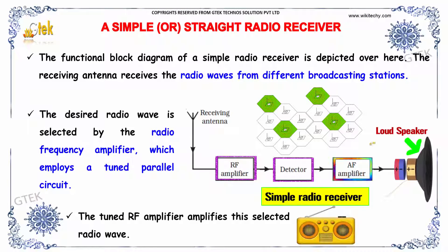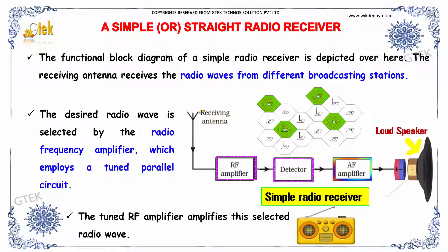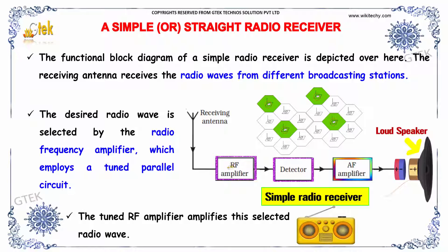Here is the functional block diagram of a simple radio receiver. The receiving antenna receives the radio waves from different broadcasting stations. The desired radio wave is selected by the radio frequency amplifier, which employs a tuned parallel circuit. The tuned RF amplifier amplifies the selected radio wave.